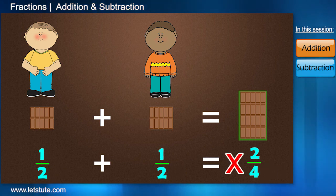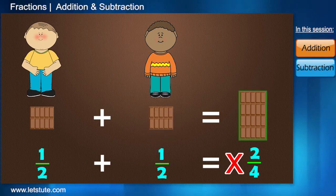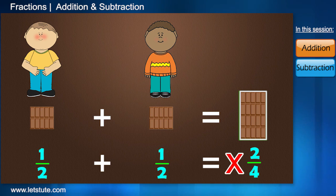But that is not true. We only have 2 parts, right? So, from this, we conclude that we add 2 different parts of the same whole and hence, we do not add the denominators because it represents the whole.